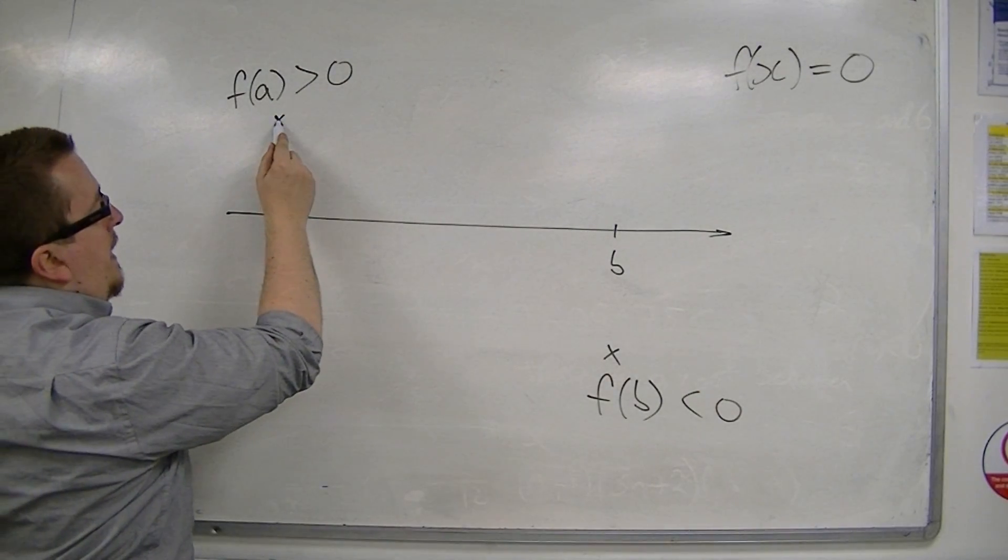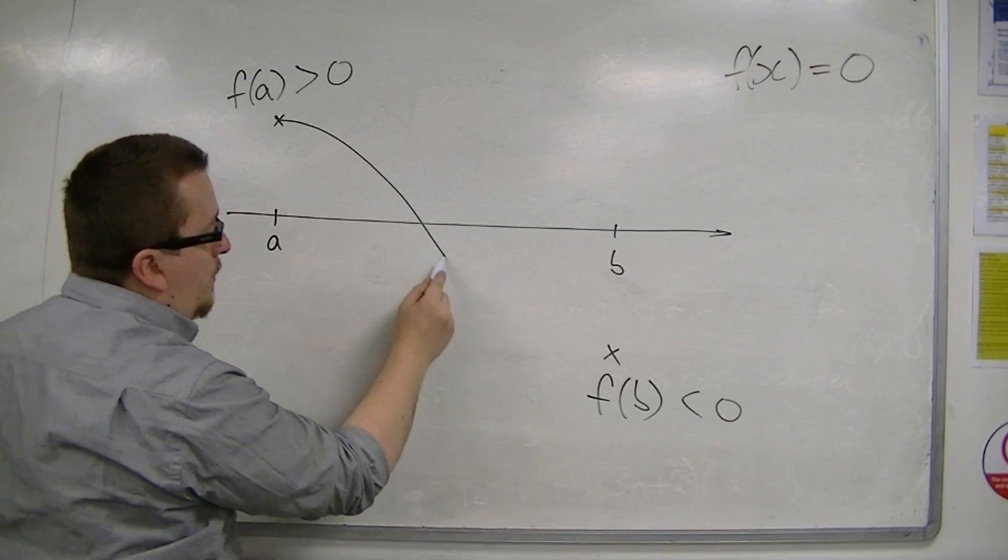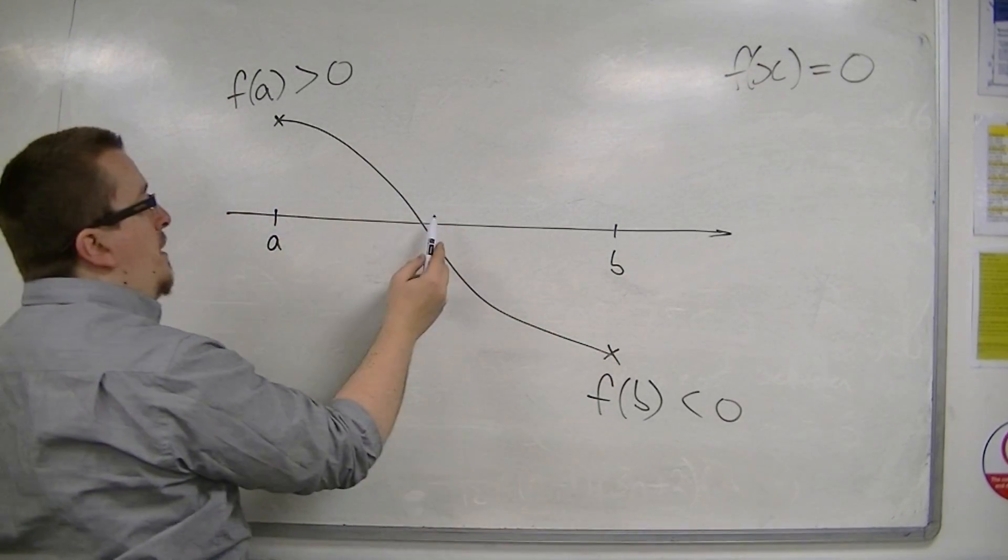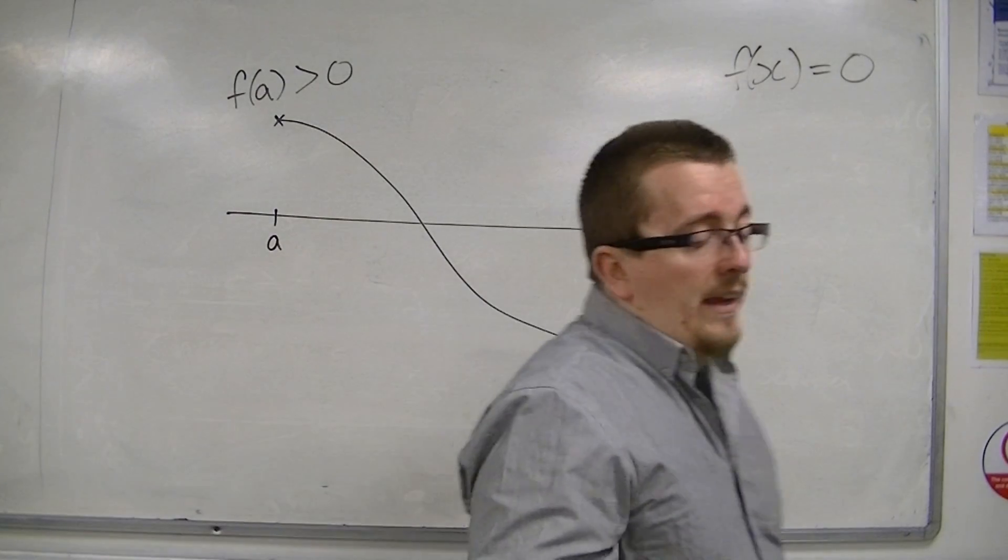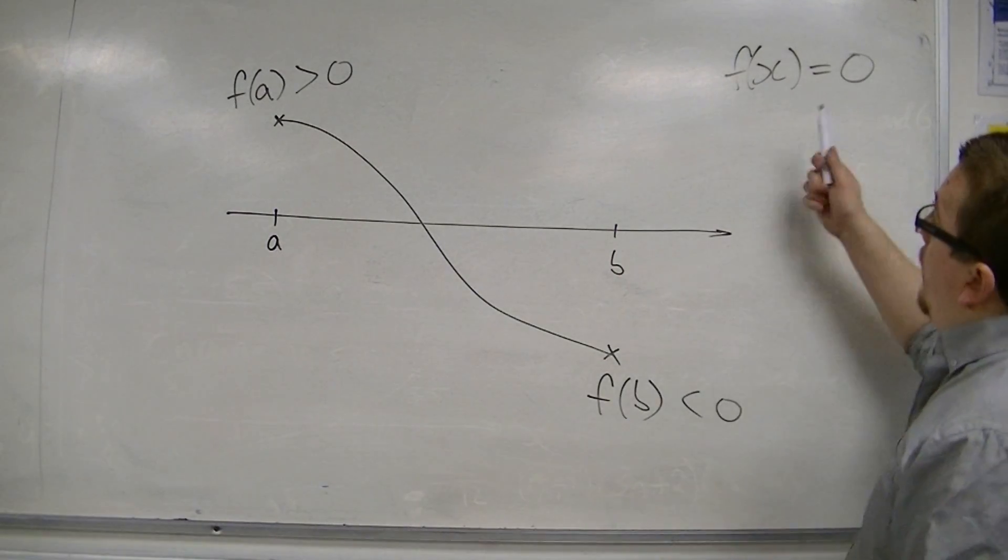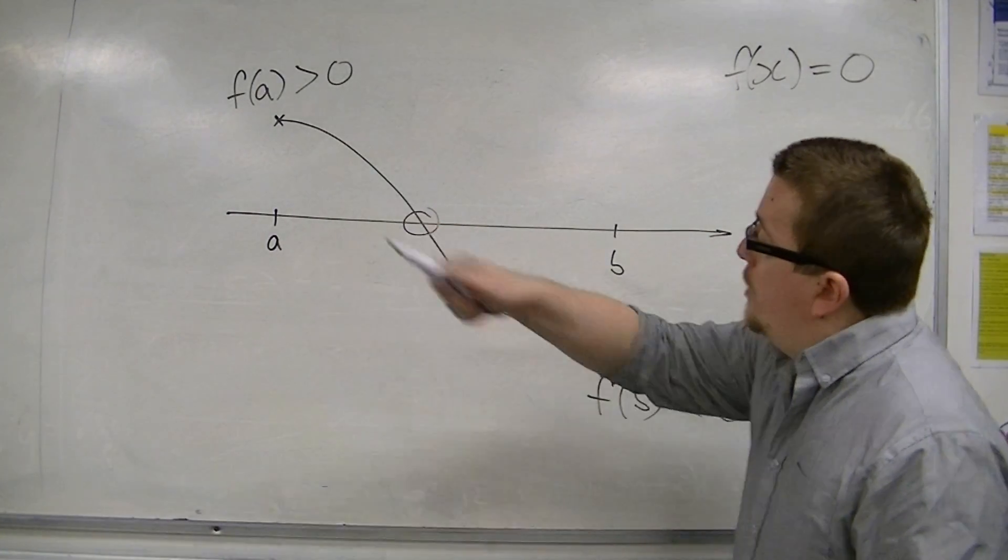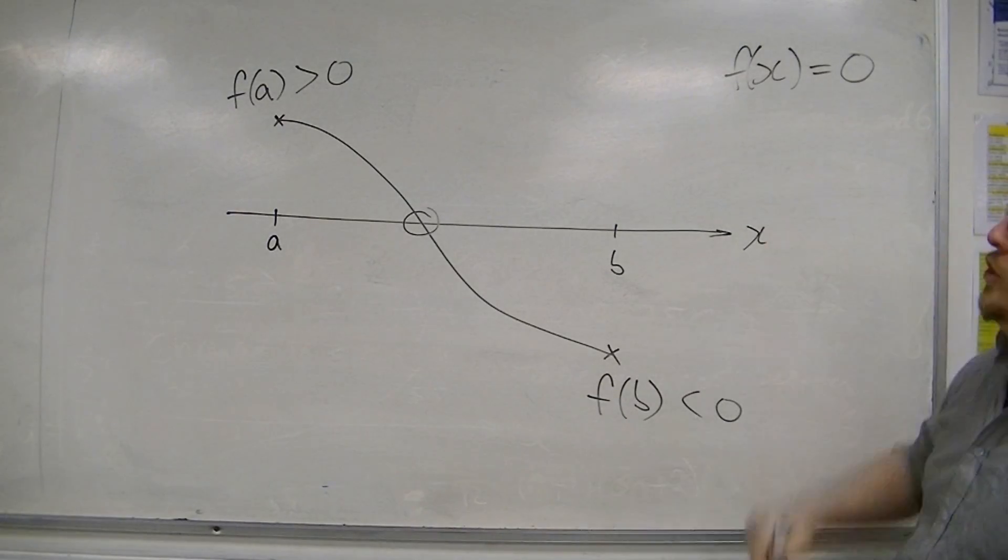then between a and b, there must have been a point where the curve crosses the x-axis. So, that will be the solution to this original equation.